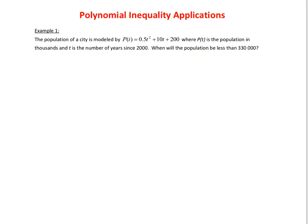Okay, now one thing to note right away is that the population is measured in thousands. So when I'm asking you, when will the population be less than 330,000, that actually means when will this equation be less than 330? Okay, and if you caught that already on your own, then that's really great.